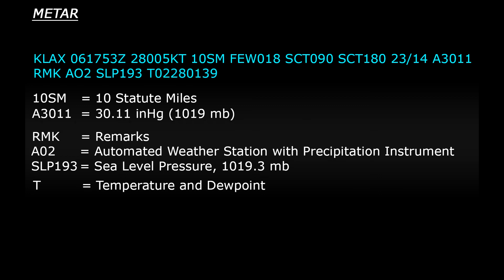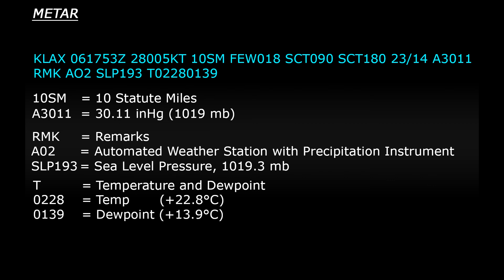Lastly is some more temperature and dew point information, giving the temperature and dew point in more detail down to a tenth of a degree Celsius. The first four numbers relate to the temperature and the last four are the dew point. The first number for both will either be a zero or a one — zero means the temperature is above zero degrees Celsius, and one means it is below zero. So in this report the temperature reading is 0228, meaning plus 22.8 degrees Celsius, and the dew point is 0139, meaning 13.9 degrees Celsius.